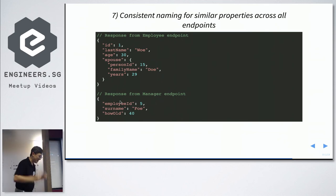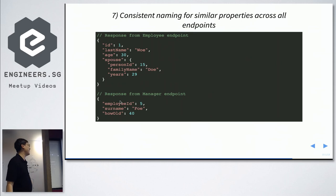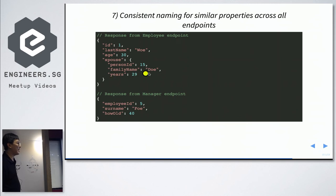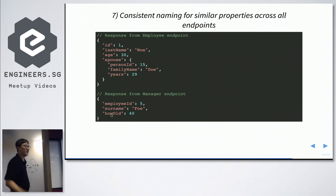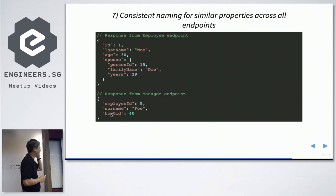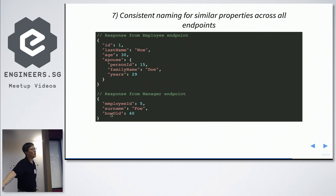Point seven: consistent naming of properties across endpoints. A bad example: employee endpoint uses 'last_name' for surname but spouse endpoint uses 'family_name'; manager endpoint uses 'surname' for the same concept. Employee uses 'id', spouse uses 'person_id', manager uses 'employee_id'. Employee uses 'age', spouse uses 'years', manager uses 'how_old'. Inconsistency wastes time. Just use 'last_name', 'id', and 'age' consistently everywhere.